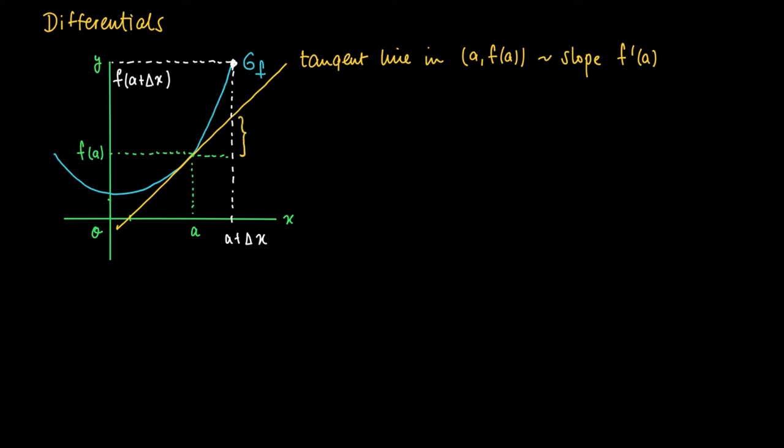So the first part is, if we would have taken the tangent line as an accurate estimate of the function value changes, then we would have seen a jump f'(a) times Δx. And in purple we see the thing that is still remaining—that's the gap ε.